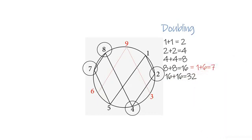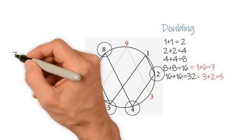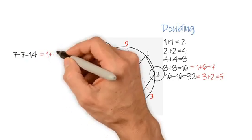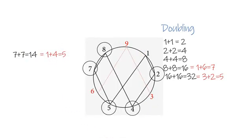So, 16 doubled is 32. Then again, 3 plus 2 equals 5. We can also double the 7. 7 plus 7 equals 14. So, 1 plus 4 is also going to be 5.